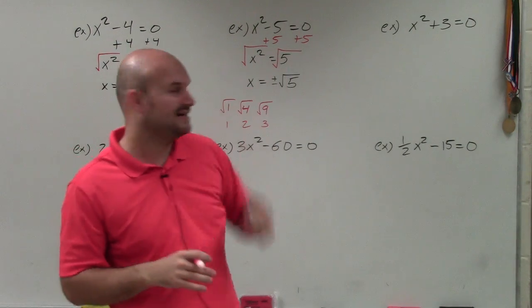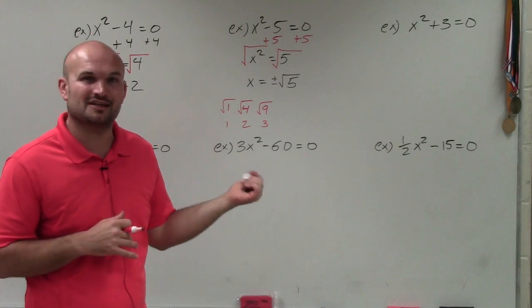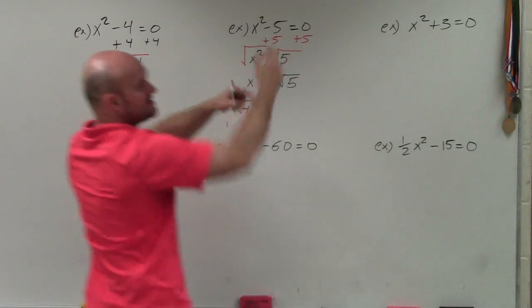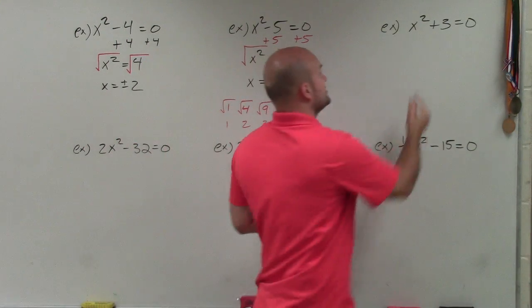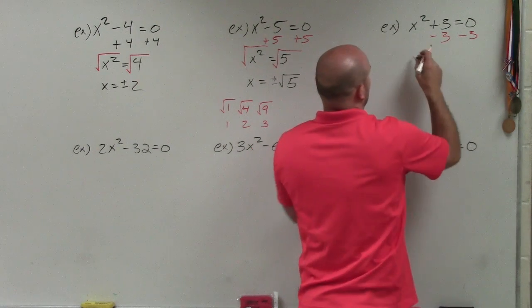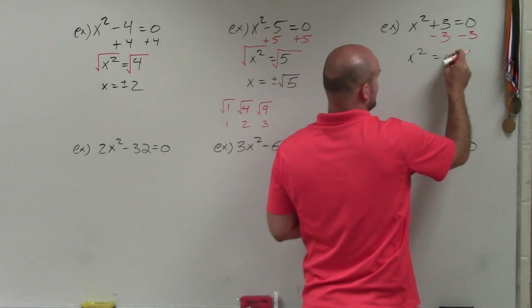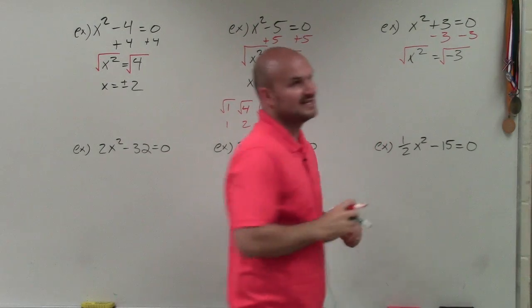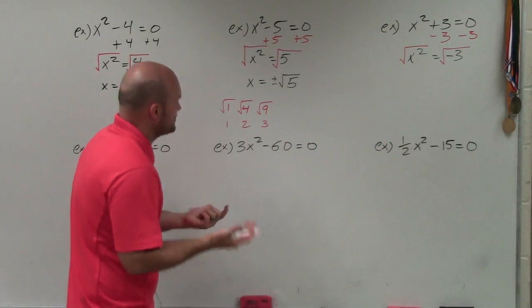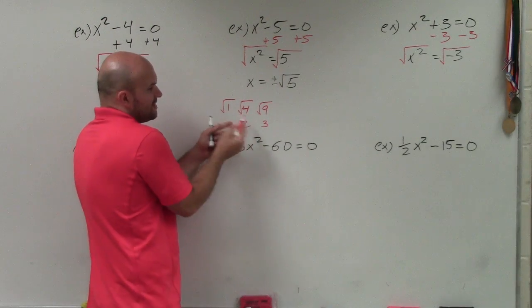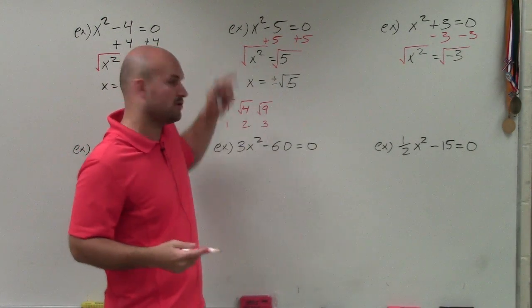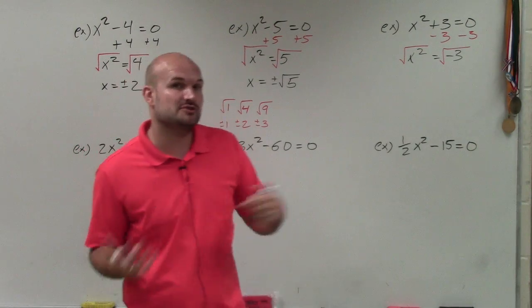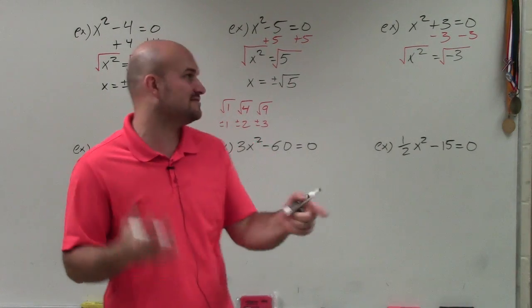We're actually going to investigate the no-solution case. In this example, you can see the first two had x squared minus a number, but this next one is x squared plus a number. So by using our inverse operations, I'm going to subtract 3 on both sides, and I obtain x squared is equal to negative 3. Now, to use the square root method, I'm going to try to take the square root of a negative number. But we can't take the square root of a negative number, because there's no number that you can multiply by itself that gives you a negative number.